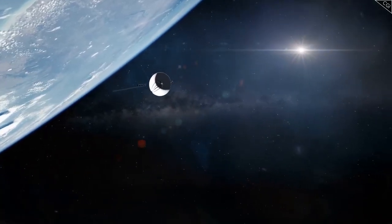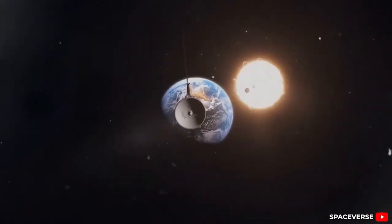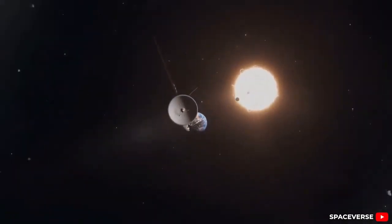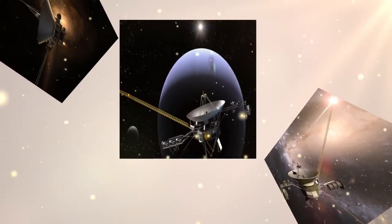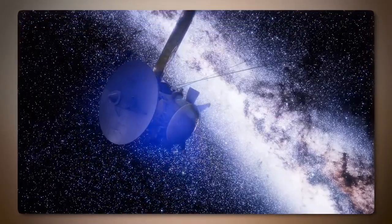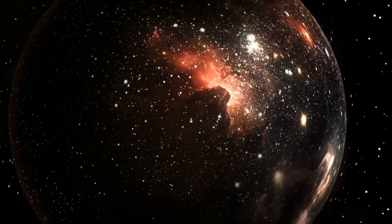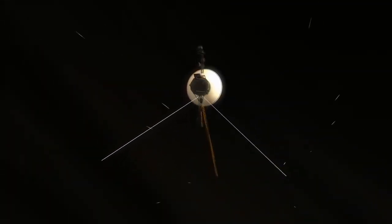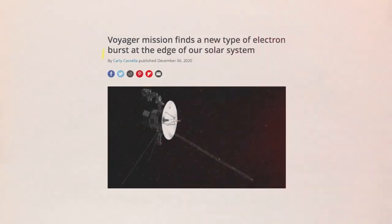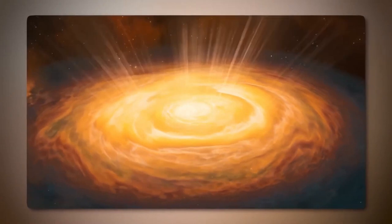Voyager 1's departure from the heliosphere, the vast bubble of charged particles created by the Sun, was confirmed when its plasma wave instrument detected a massive solar eruption between April 9 and May 22, 2013. The eruption caused nearby electrons to vibrate, and researchers found that the surrounding electron density was significantly higher than that within the heliosphere. By analyzing this data, scientists pinpointed Voyager 1's official entry into interstellar space to August 25, 2012.